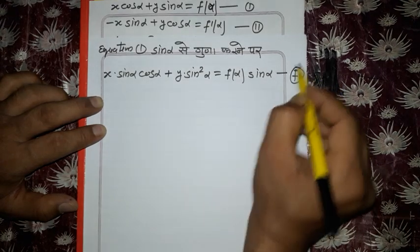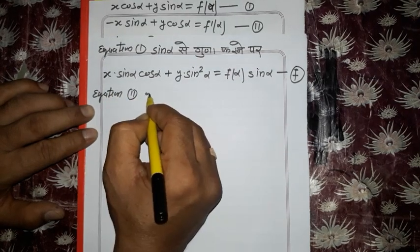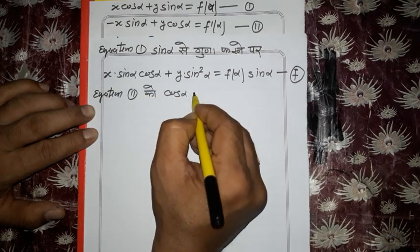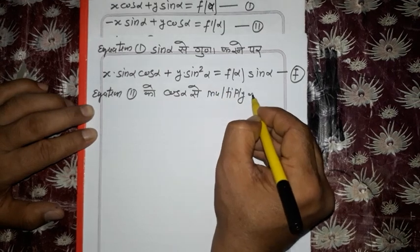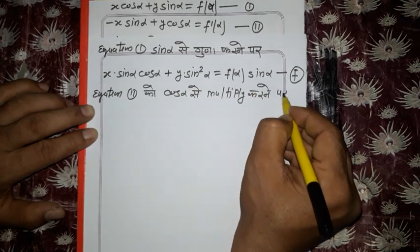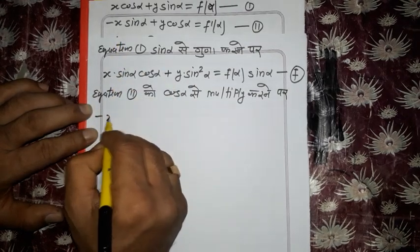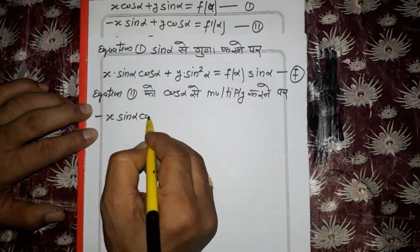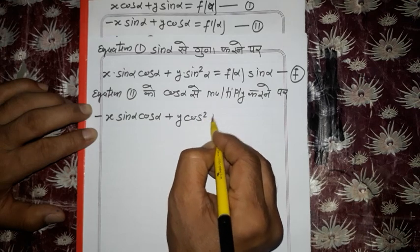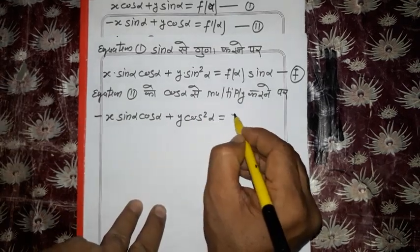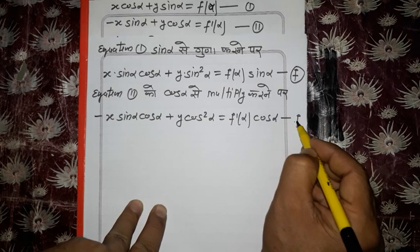Multiplying equation 2 by cos α gives: -x sin α cos α + y cos²α = f'(α) cos α. This is equation (e). Now adding equations (f) and (e): the x sin α cos α terms cancel, and we get y(sin²α + cos²α) = f(α) sin α + f'(α) cos α.